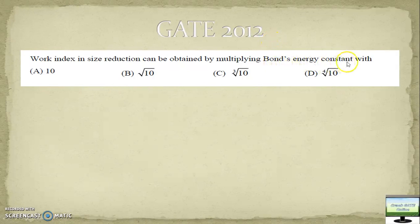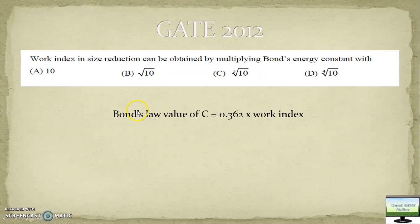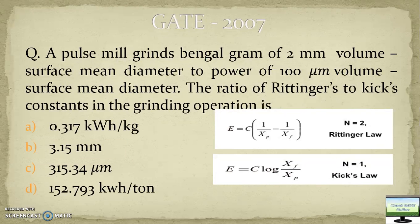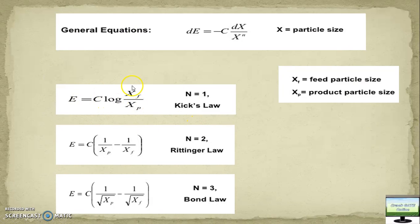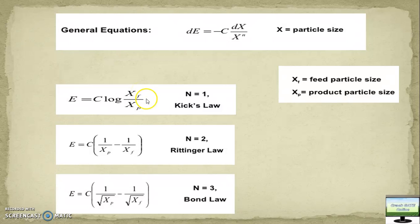See the question from 2012. They ask directly about the Bond energy constant: E = 0.031 times work index. They ask what you need to multiply — that value is more or less equal to the square root of 10. For these formulas, sometimes they give you feed and product size for one operation with energy required, from which you calculate C. Then they ask for energy to reduce from a different size, say 5 mm to 4 mm — you put the calculated C into the formula and find the energy. Similar question types apply for Rittinger and Bond as well.